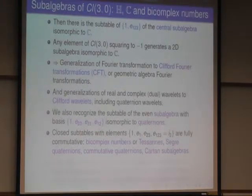This commutes anyway, they commute too as well. And this is the algebra of bicomplex numbers, or tessarines, also known under other names: split quaternions, commutative quaternions, or Cartan subalgebra.